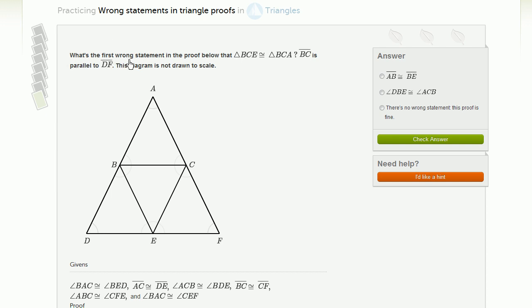We're asked what's the first wrong statement in the proof below that triangle BCE, so that's this middle triangle right over here, is congruent to triangle BCA, that's this top triangle right over there. They tell us that BC is parallel to DF and that the diagram is not drawn to scale. We're going to check their proof to see if it's either correct or if there's a wrong statement in it.